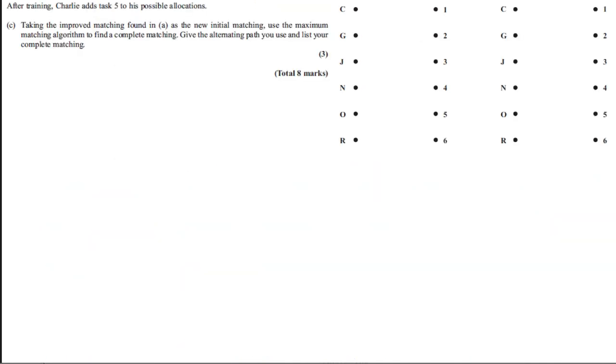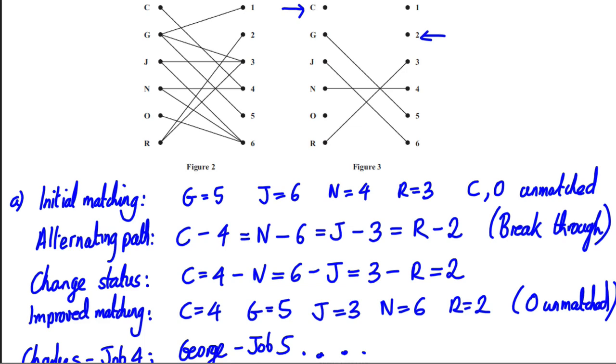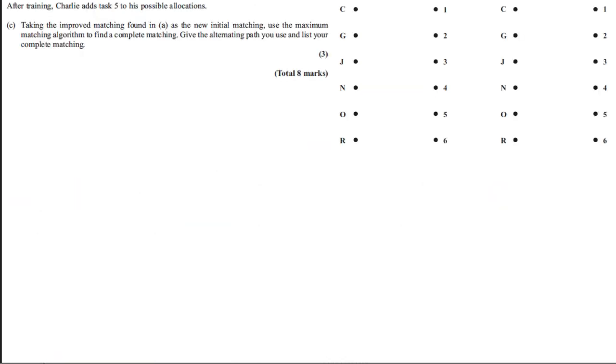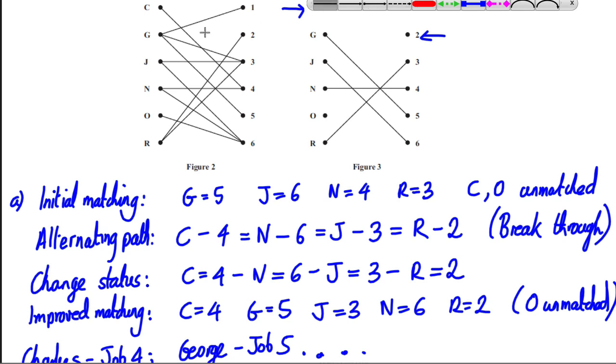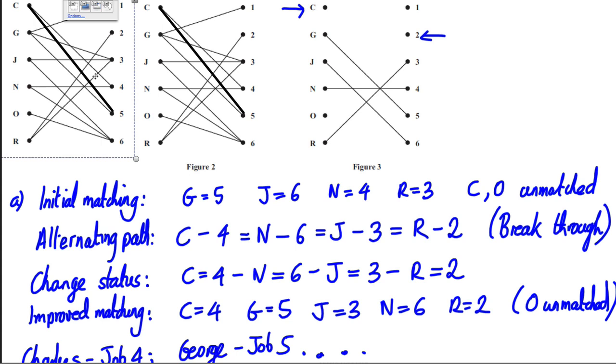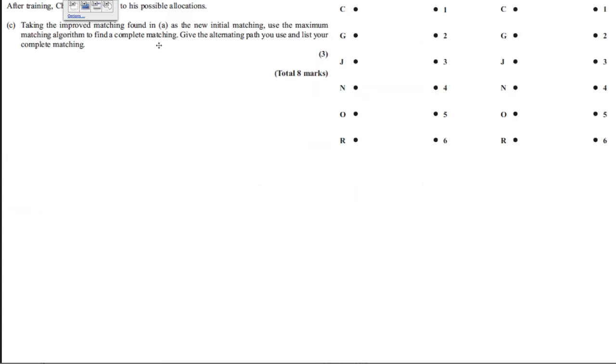So the question moves on then. And it says, after training, Charlie adds Task 5 to his possible allocations. Taking the improved matching found in Part A as the new initial matching, use the matching algorithm in order to find a complete path. So now it's telling us that C, Charlie can do 5. So let's draw this in. Charlie can now do 5. So what I'm going to do is I would have drawn that on my work. But I'll just copy that for now. And I'll put that as my possibility one.